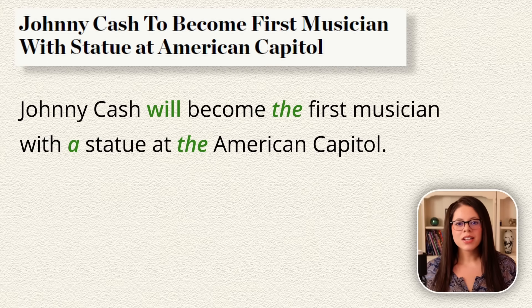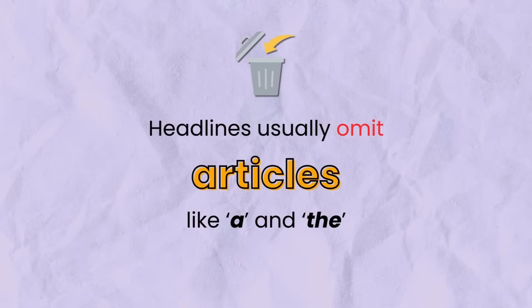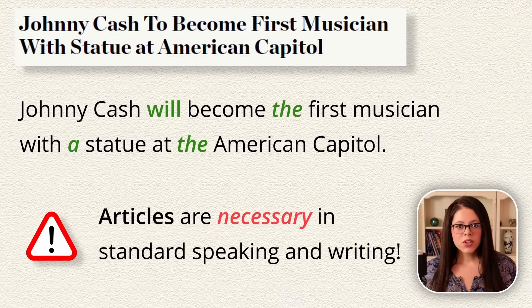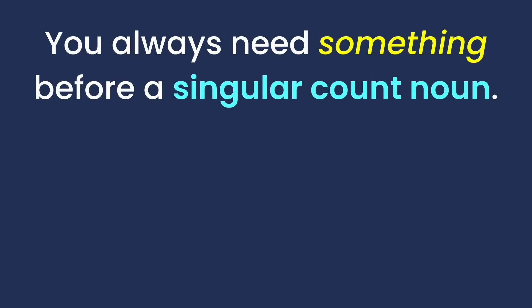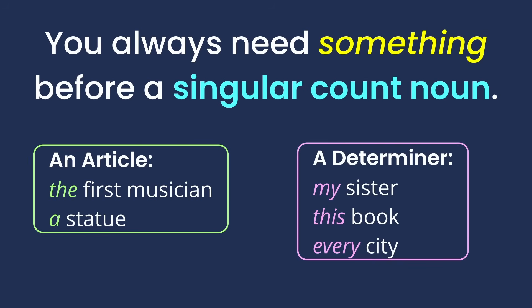This brings me to another very important tip: headlines usually omit articles like 'a' and 'the.' However, articles are necessary in standard speaking and writing. Remember this rule — you always need something before a singular count noun. This can be an article like 'the first musician' or 'a statue,' or a determiner like 'my sister,' 'this book,' and 'every city.'